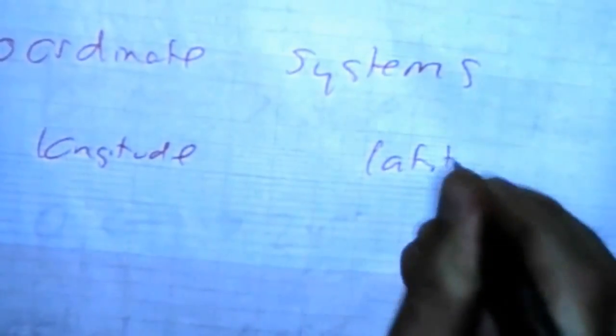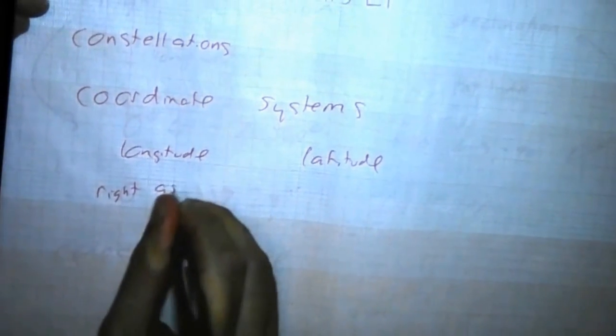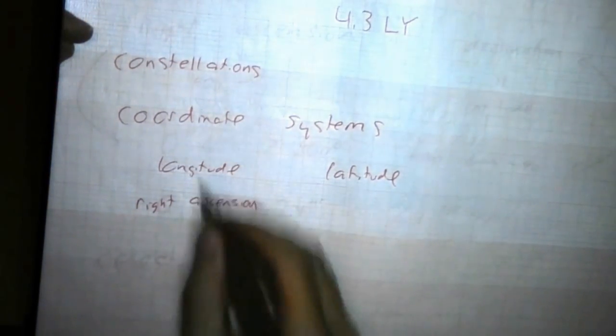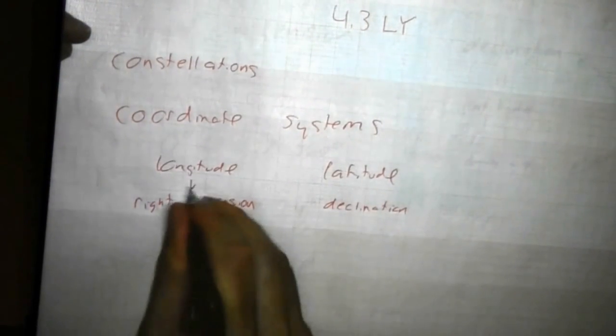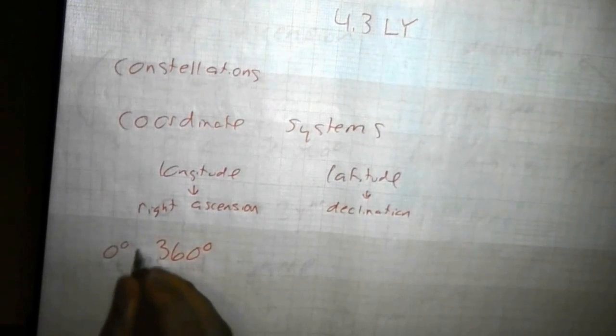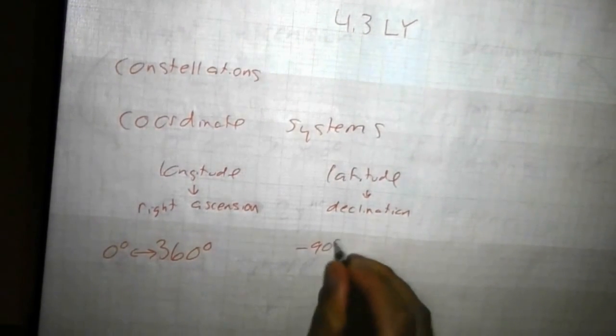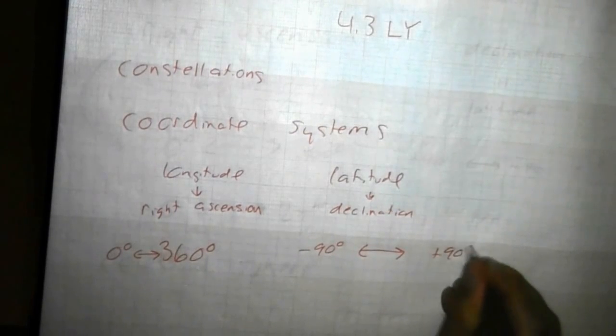So on the Earth we have longitude and latitude. And on the sky we have, which one corresponds to longitude? Right ascension or declination? Right ascension. It's a weird term, but that's what it's called. You can just think of it as longitude for the sky. Latitude we call declination when fixed to the sky. Now let's write down the ranges here. Whether it's longitude or right ascension, we have 360 degrees going around the sphere, 0 to 360 degrees. And latitude, we go from minus 90 degrees at the South Pole, whether it's the South Pole of the Earth with latitude or the South Pole of the celestial sphere, to plus 90 degrees at the North Pole.